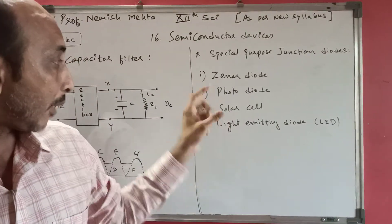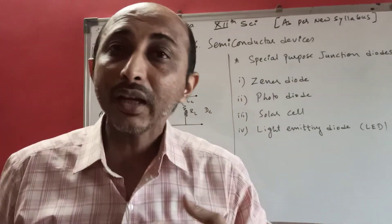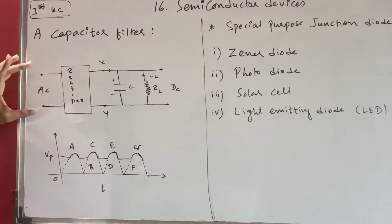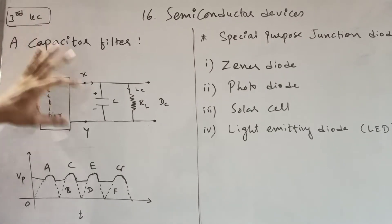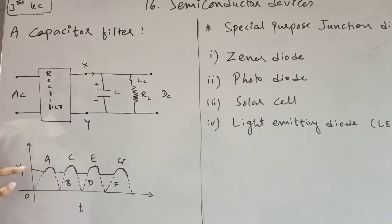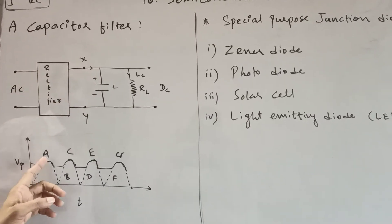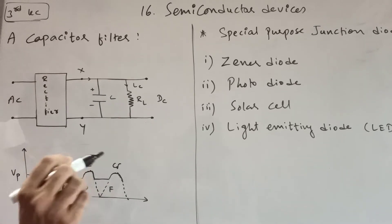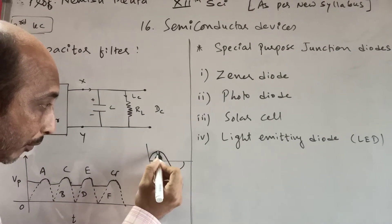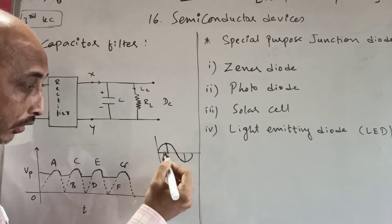Whatever circuit or power supply is connected at the output - like a bulb - it will work from this output supply. Now, the capacitor operates based on the cycle. In one-fourth of the cycle, the voltage reaches its peak value (Vp). Starting from zero, at one-fourth it reaches peak, at half it is 50%, at three-fourths it reduces, and at complete cycle it is zero again.